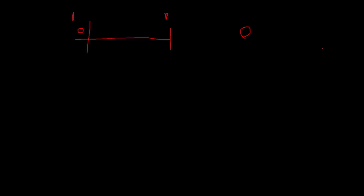If we get a 2, we place it at the right pointer's position and decrement the right pointer by one. If we encounter a 1, we do nothing — we just leave it in the middle. This way we sort the array in-place without using any external space, solving it in linear time.